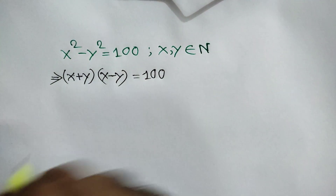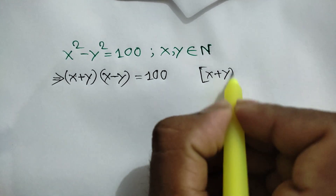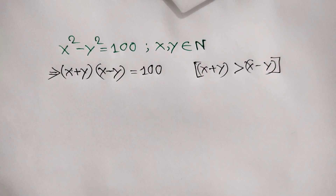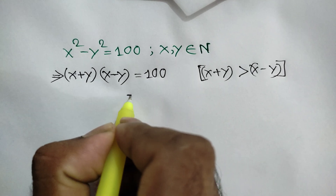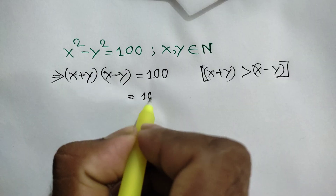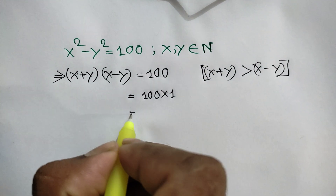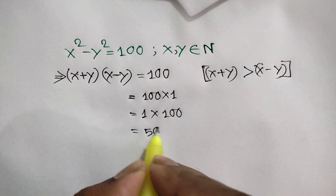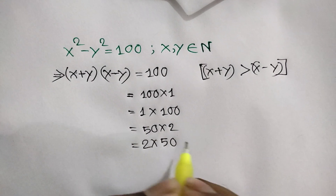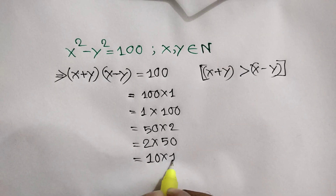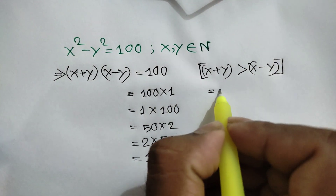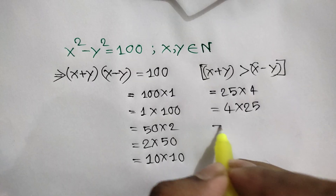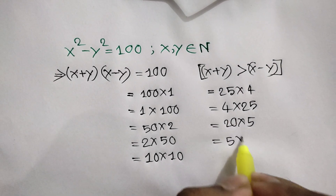Here x plus y is always greater than x minus y. Now factorizing 100 we will get the factor pairs: 100 times 1, 50 times 2, 10 times 10, 25 times 4, and 20 times 5.